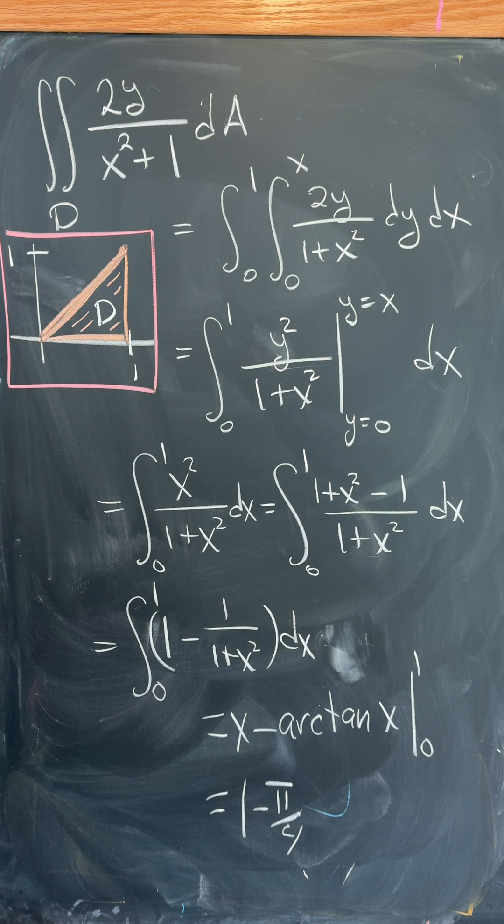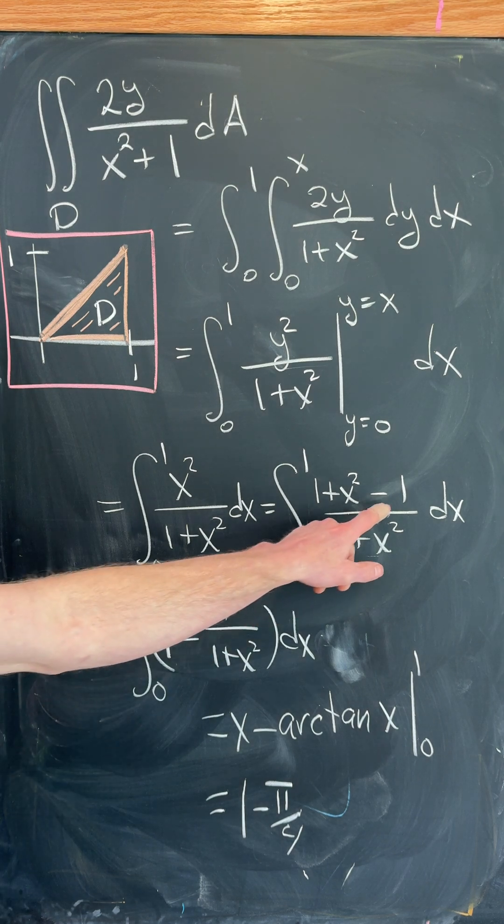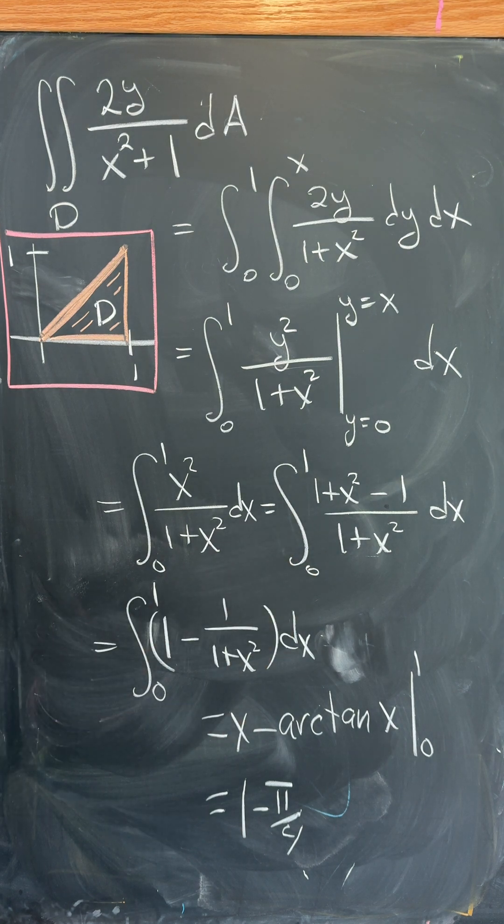Now the trick here is to add 0 by subtracting 1 and adding 1 and splitting that fraction up so that we get 1 minus 1 over 1 plus x squared. But now we can integrate that out to x minus the arctan of x